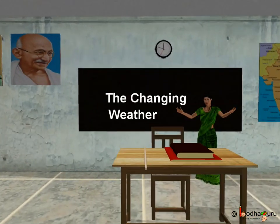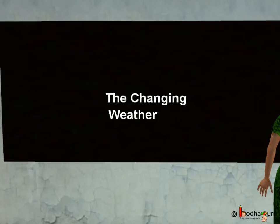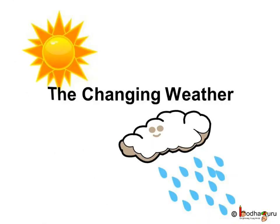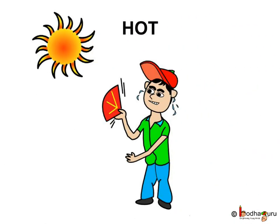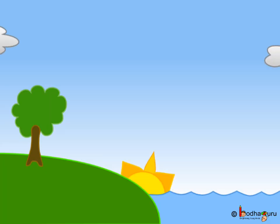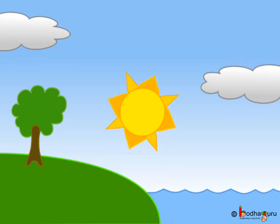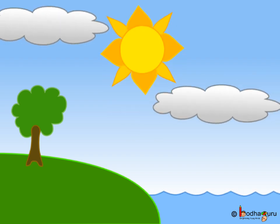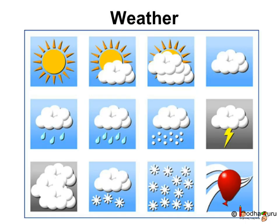Good morning children, now we shall learn about the changing weather. Sometimes you find it is sunny outside, sometimes windy, sometimes it rains, sometimes it is cold, isn't it? But how can all this happen? This all depends upon the sun — basically the heat received by the earth from the sun. It is due to the heat of the sun that the surrounding air becomes hot or cold. This change is called weather.